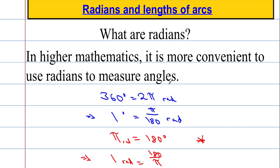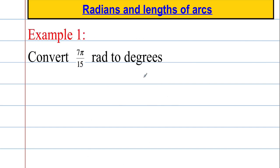For now let's crack on with an example. So I want to convert 7π over 15 radians to degrees. We know that 1 radian is 180 over π degrees, which implies that 7π over 15 radians must equal 7π over 15 times by 180 over π. So we can cancel out the π's, and also 15 will divide into 180 twelve times. So 7π over 15 is in fact going to be equal to 7 times 12, which is 84 degrees.